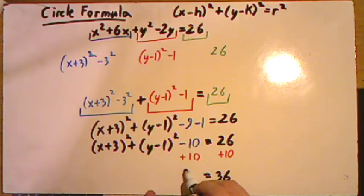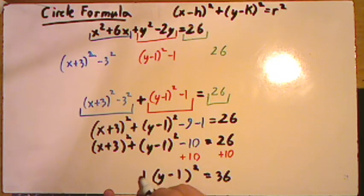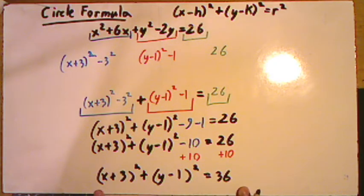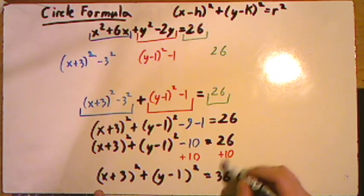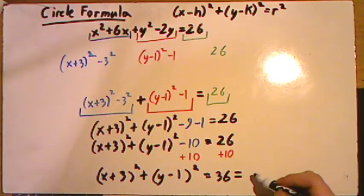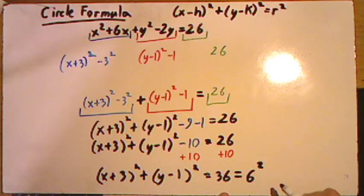On the left we have our formula of y minus 1 squared and an x plus 3 squared giving us our original formula where you can take this a step further and square rooting the 36 so that you can get its original value of 6 squared.